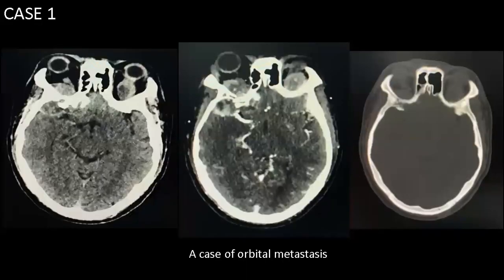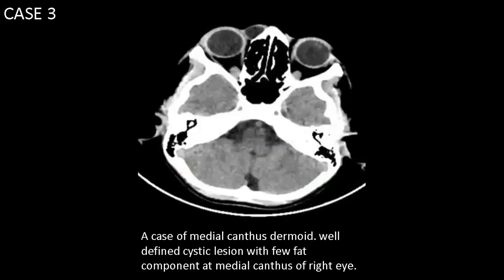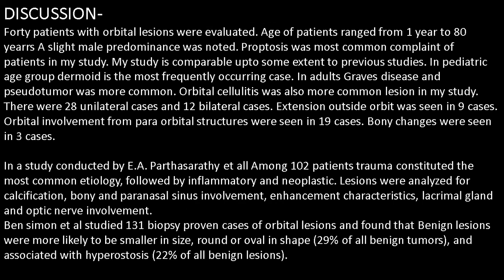In Case 1, a case of orbital metastasis, you can see heterogeneously enhancing soft tissue density lesions in bilateral retroorbital space involving both intra- and extraconal compartments with erosion of the greater wing of the sphenoid. Case 2 was a case of thyroid ophthalmopathy; on axial CT with contrast, it shows bulky bilateral inferior recti muscles. In Case 3, a case of medial canthus dermoid, a well-defined cystic lesion with few fatty components at the medial canthus of the right eye can be noted.